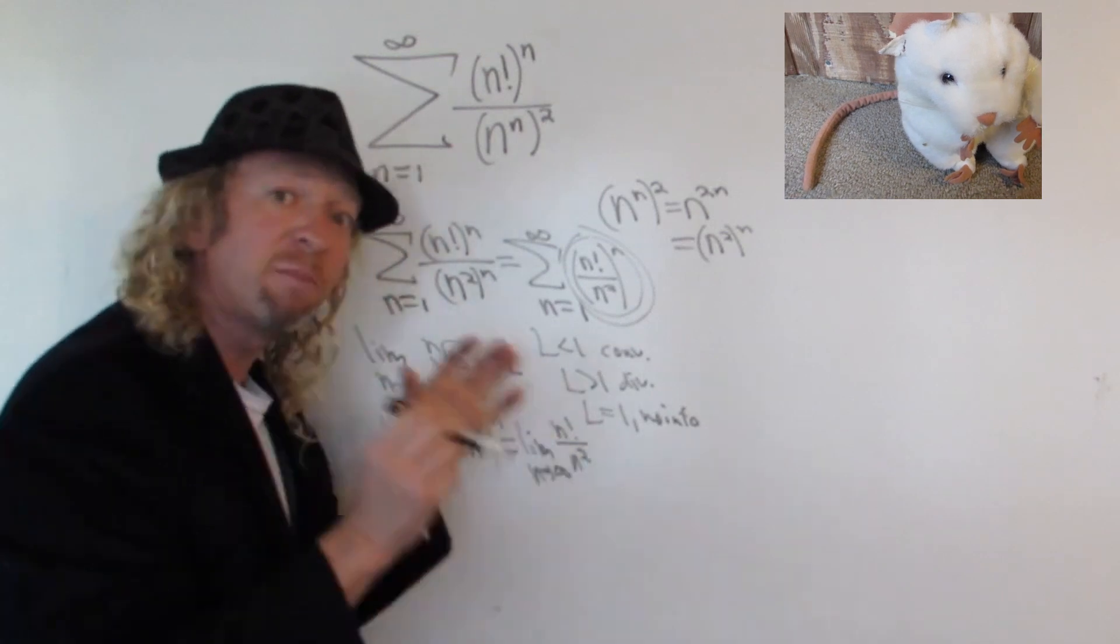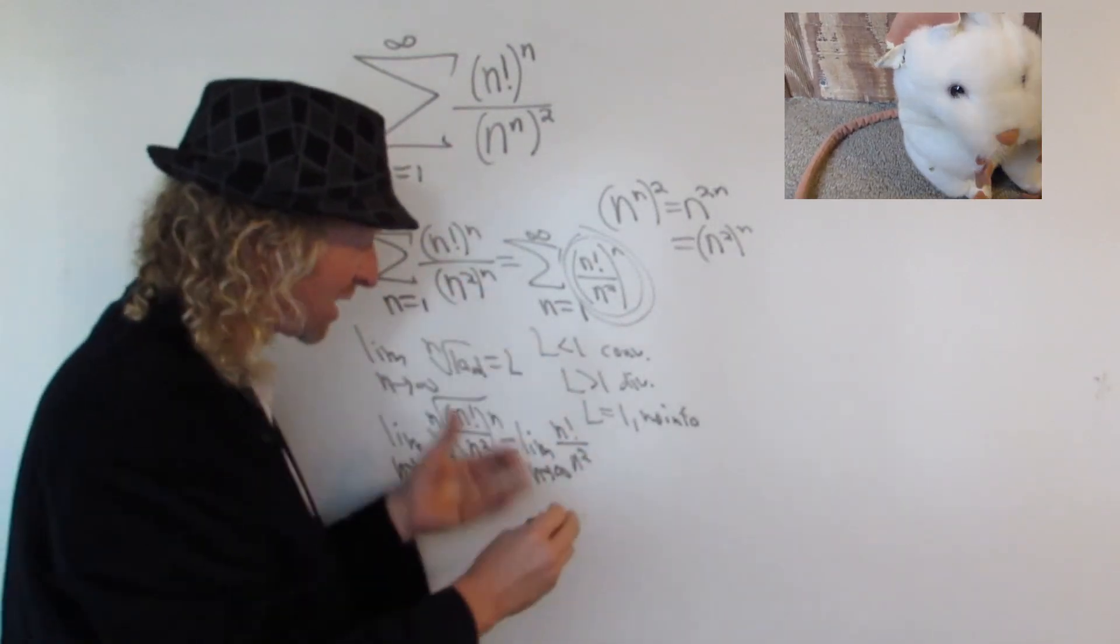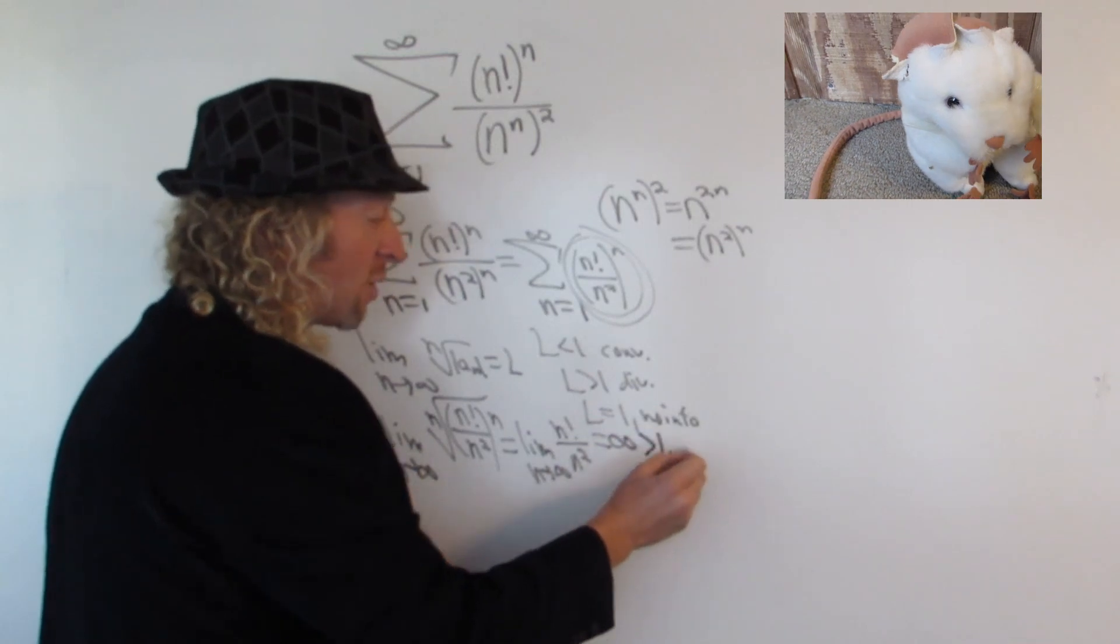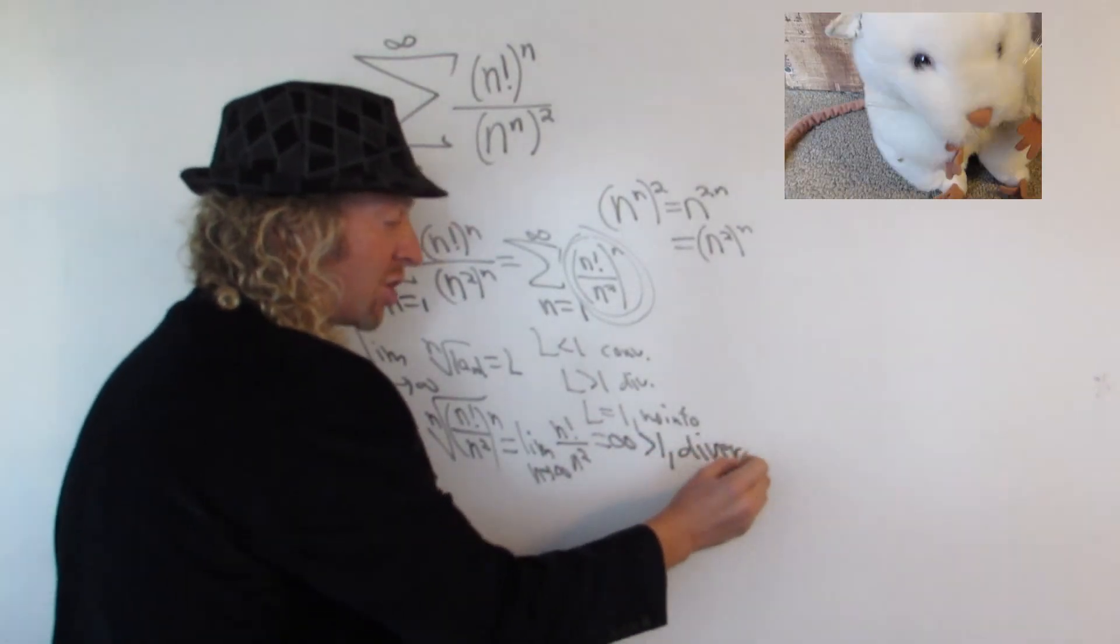And everyone knows that n factorial grows way faster, so much faster than n squared. So the top is getting big really, really fast. So this limit is infinity, that's bigger than 1. So we say that the series in question diverges.